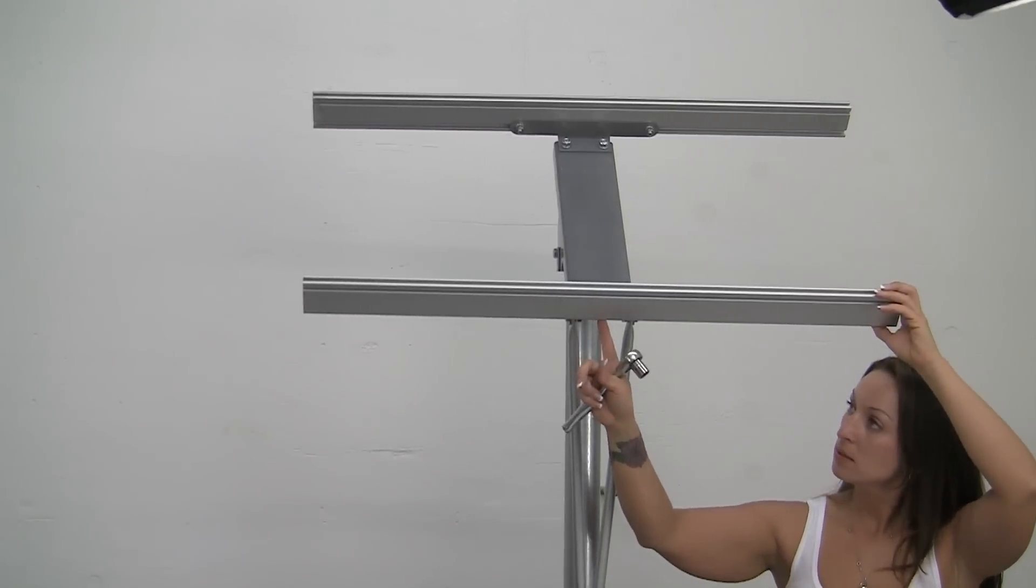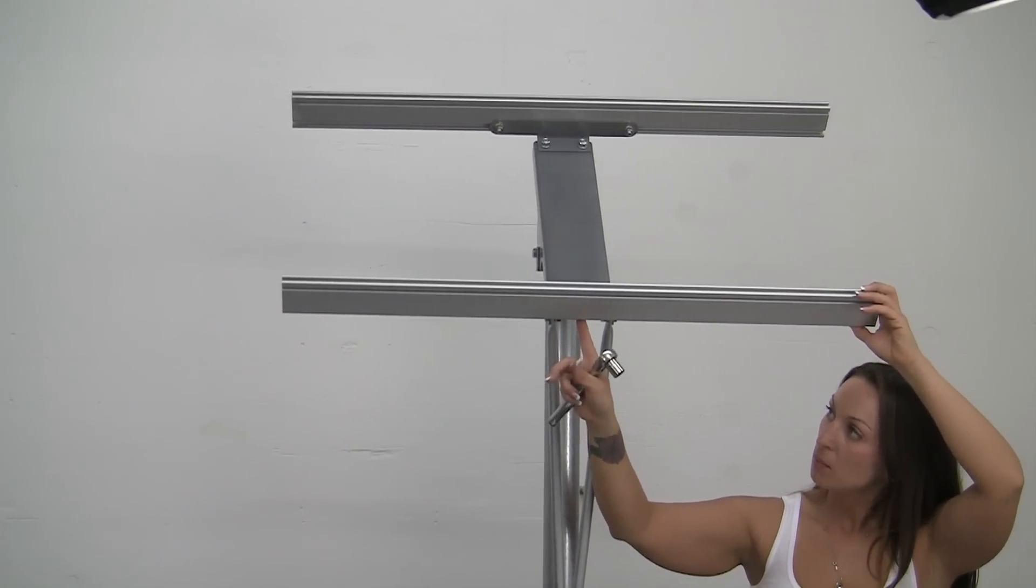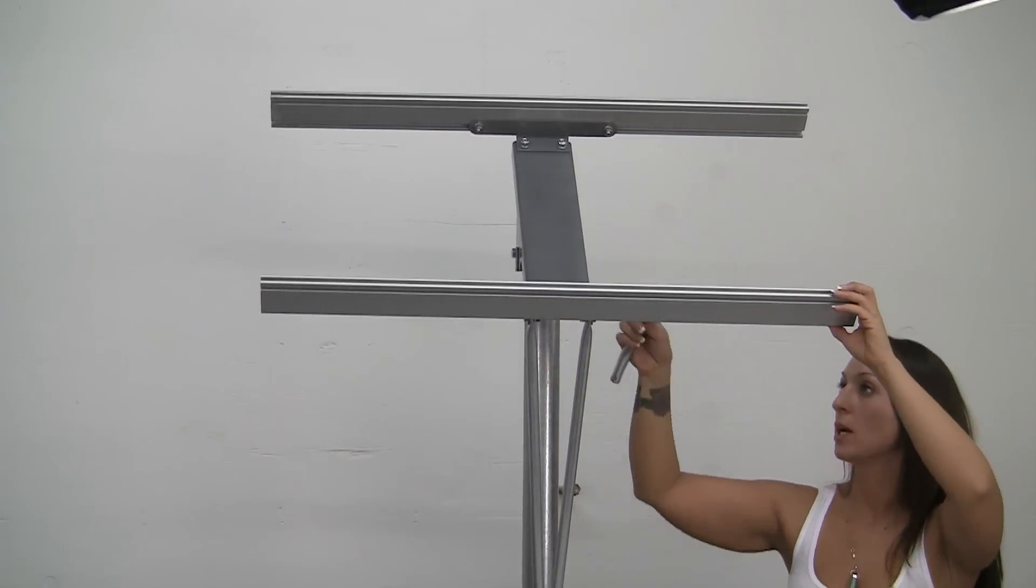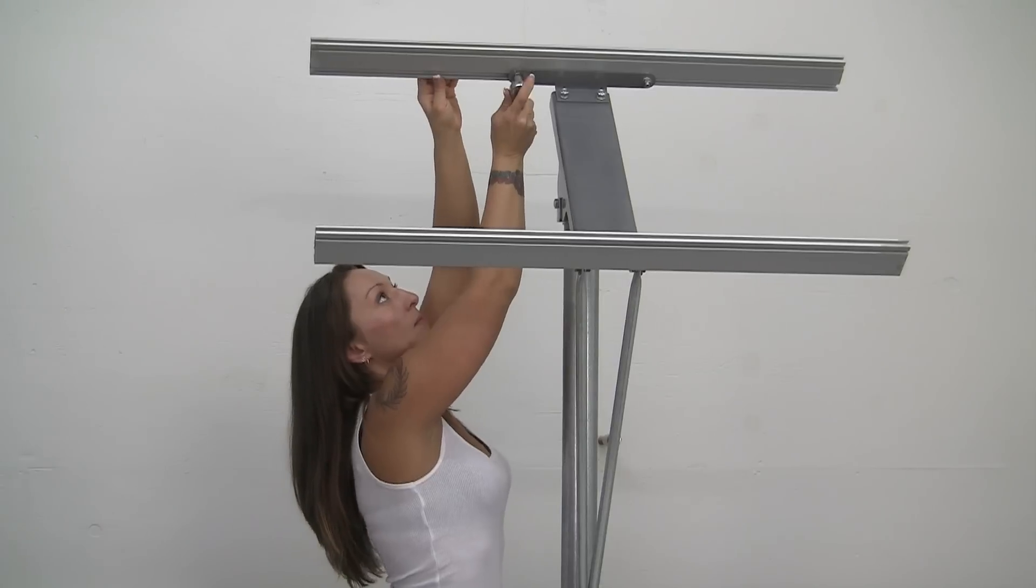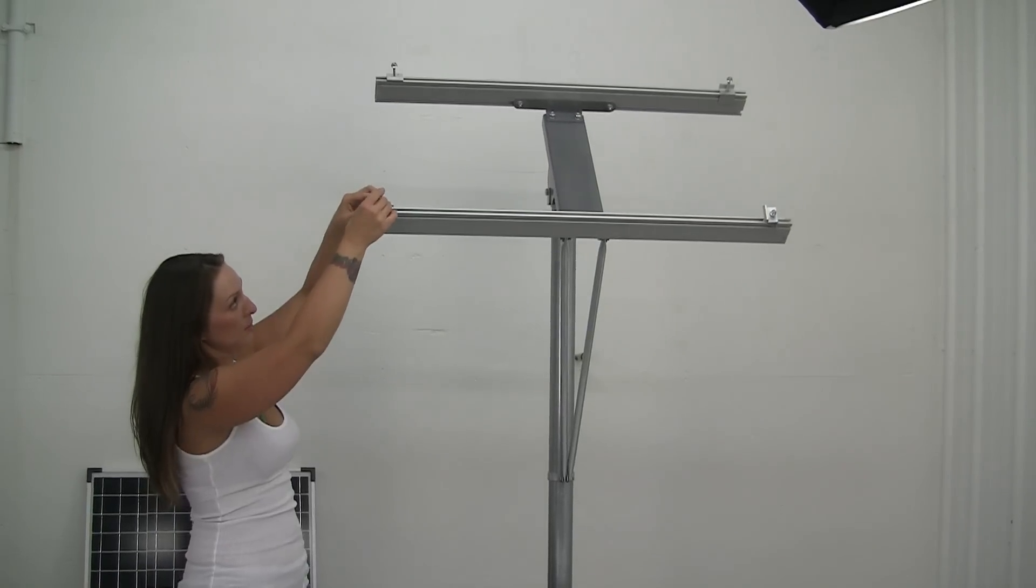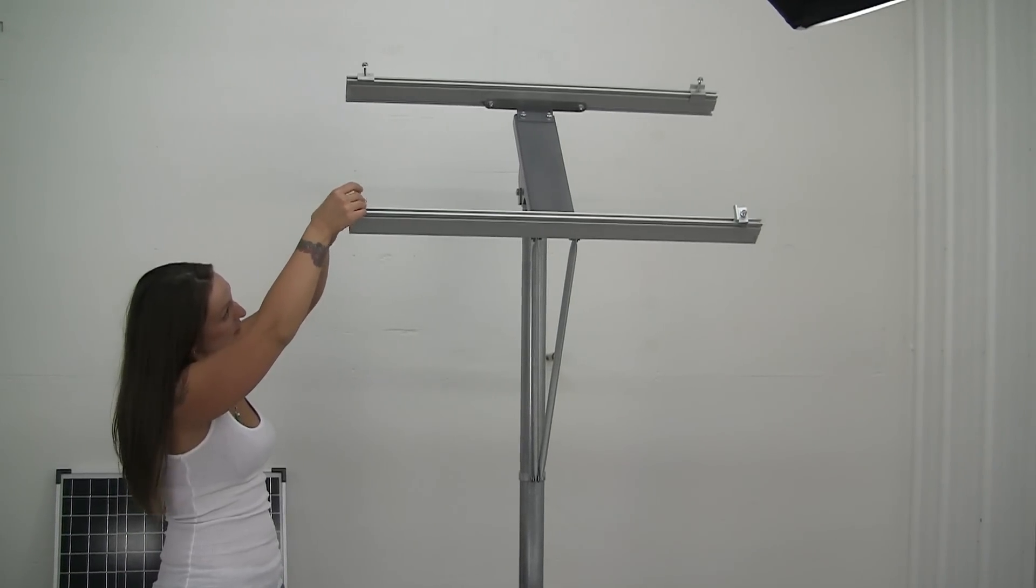Now mark on the middle of the pole and actually on there so you line them up straight. Okay, these are the clamps that actually go on the ends for the solar panel.